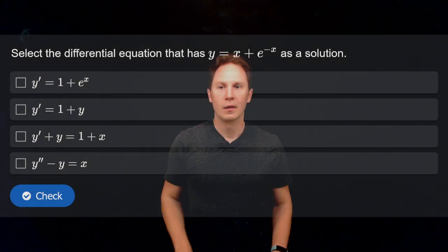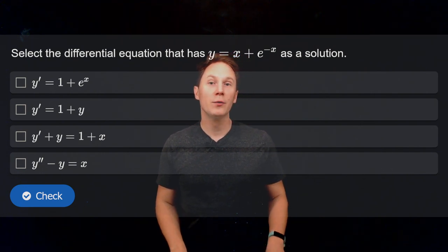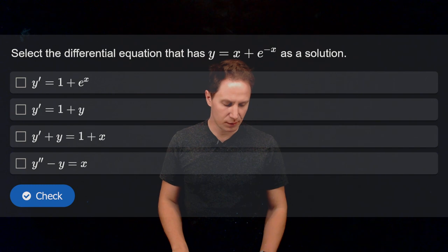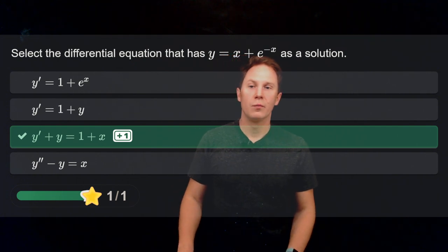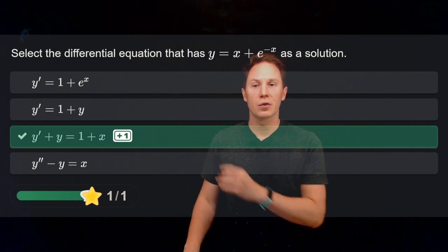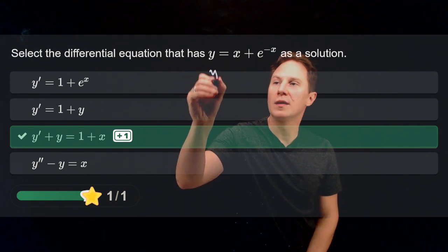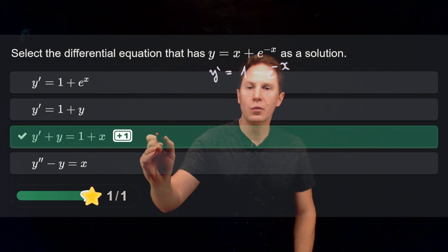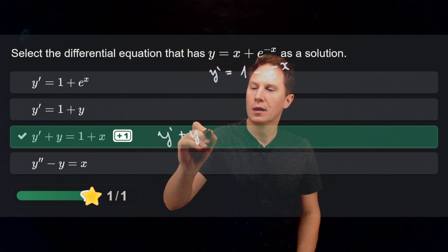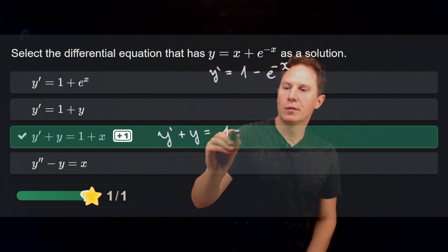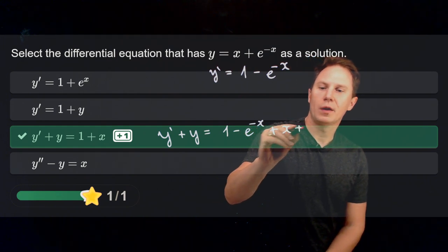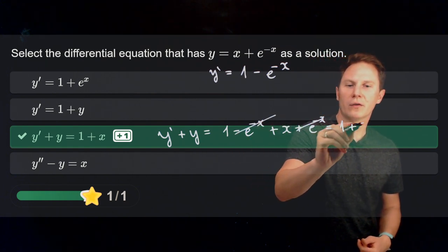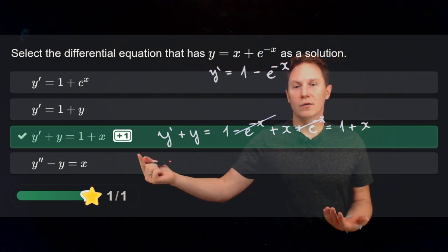Select the differential equation that has y equals x plus e to the negative x as a solution. We check by computing the derivative of the function: y prime equals 1 minus e to the negative x. When we compute y prime plus y, we get 1 minus e to the negative x plus x plus e to the negative x. The e to the negative x terms cancel, leaving us with 1 plus x. This confirms that the function is a solution of that differential equation.